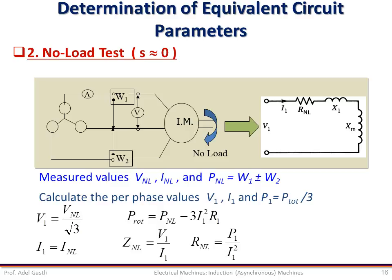Finally, the equivalent no-load reactance can be deduced from the calculated total impedance and the resistance. Note that this no-load reactance is actually the sum of the stator winding leakage reactance X1 and the magnetizing reactance XM. We cannot separate them at this moment, but we will come back to this expression later.